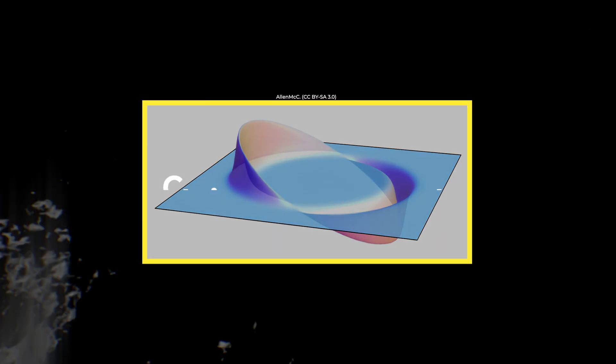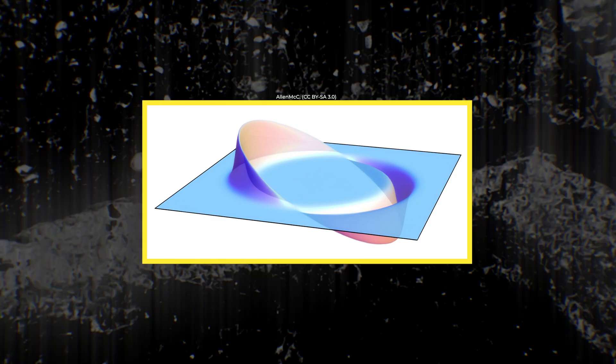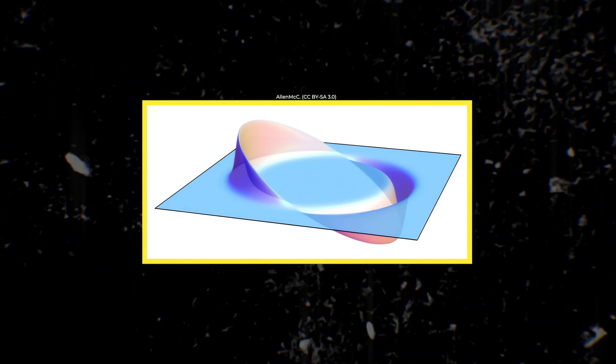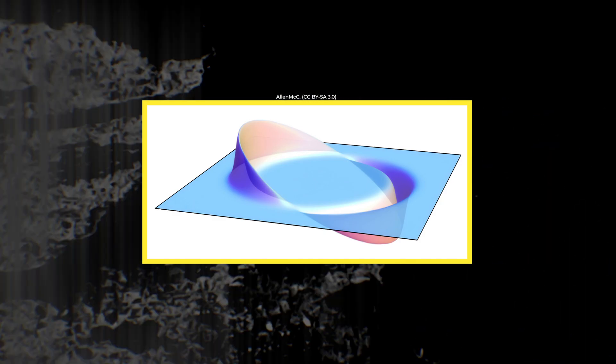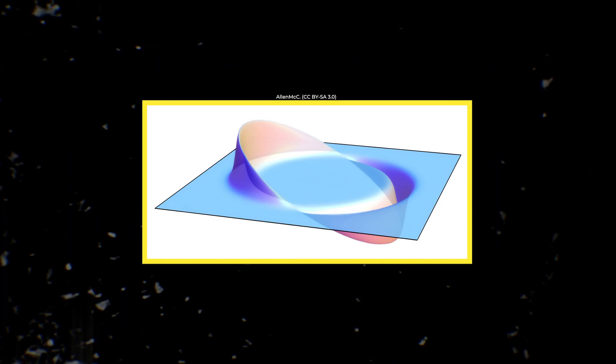In 1999, physicist Chris Van den Broeck showed that expanding the volume inside the bubble, but keeping the surface area constant, would reduce the energy requirement significantly to just about the mass of the sun. A significant improvement, but still far beyond all practical possibilities.